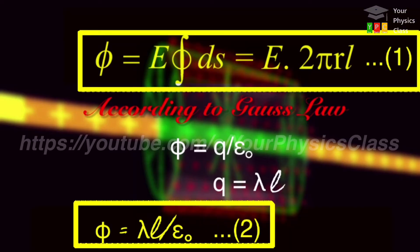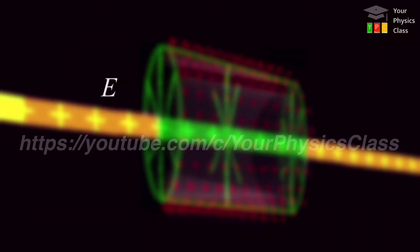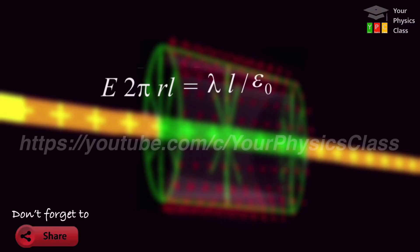Comparing equation 1 and 2, we get E into 2 pi r l equals lambda l divided by epsilon zero. Canceling like terms from both sides and simplifying it to obtain E equals lambda divided by 2 pi epsilon zero r.